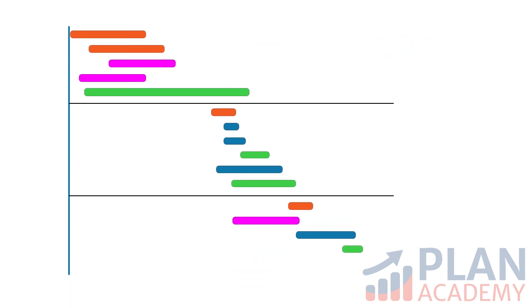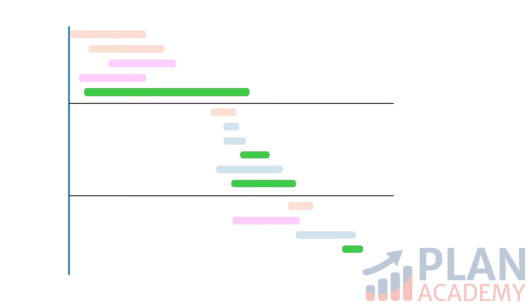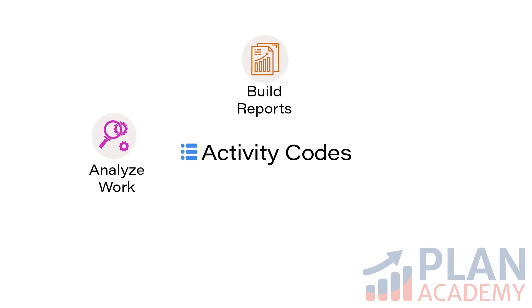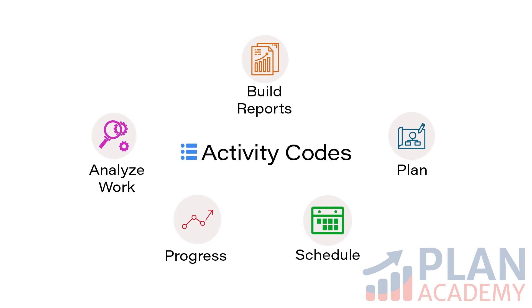And when you want to get fancy, you can do this: show me the work my subcontractor is doing in Area 1, related to Contract Item D. With Activity Codes, you now have the power to slice and dice your activities, to build reports, analyze work, and facilitate planning, scheduling, and updating.